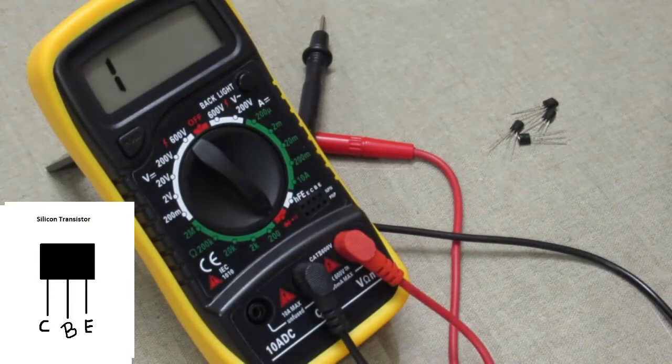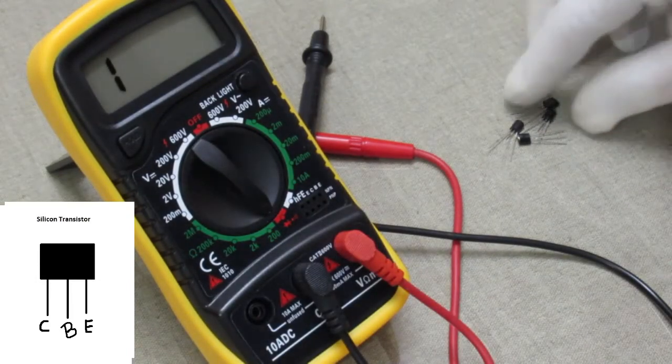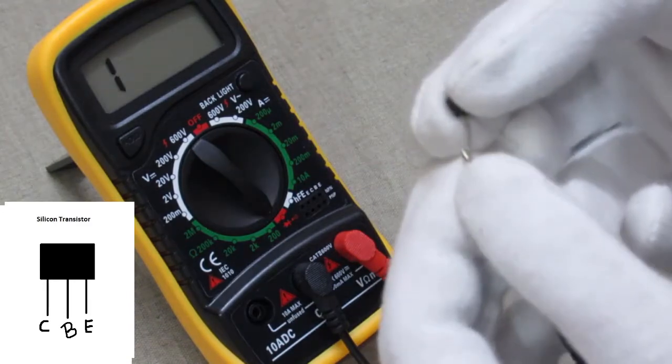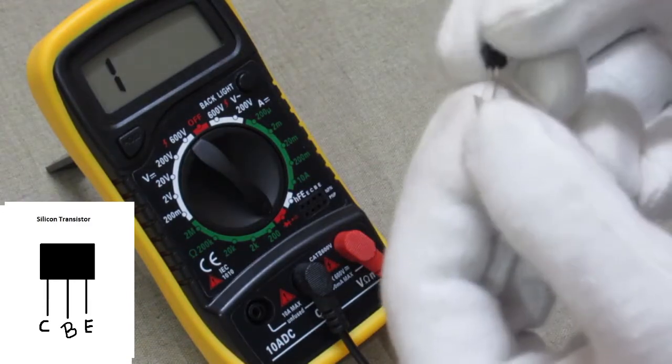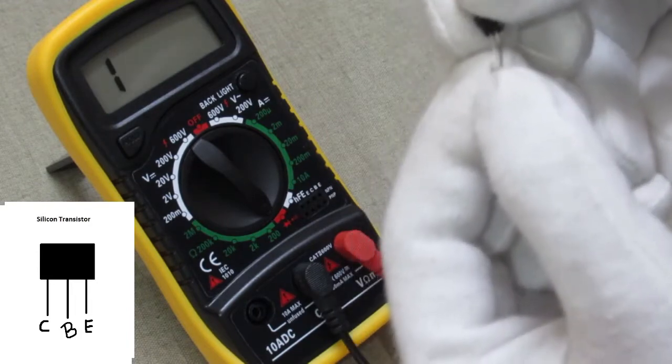And now let's take a transistor. Transistor has three terminals that is collector, base, and emitter.